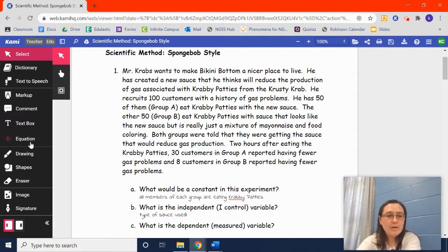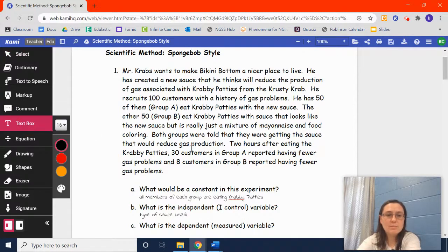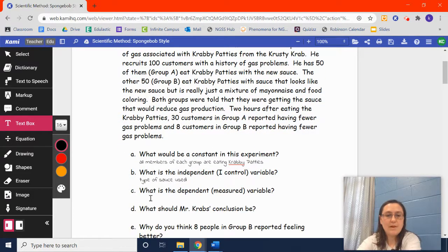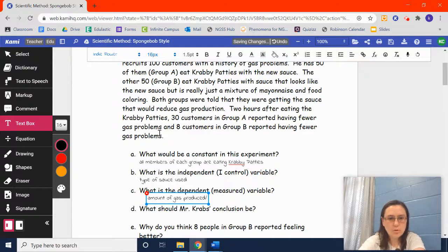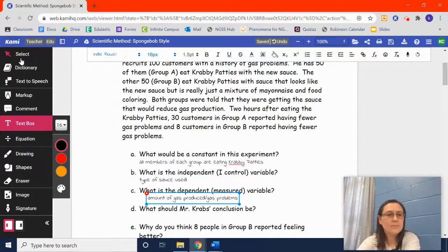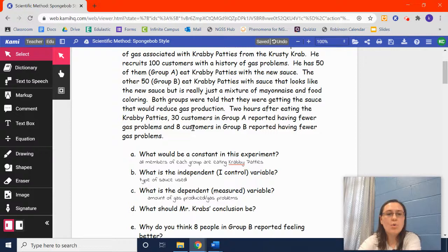The dependent or the measured variable then, what was he measuring? What was the point of giving them that certain type of sauce? The dependent variable then would be the amount of gas produced. We'll say, as it says right here, gas production, or gas problems, it says here. So, the amount of gas produced is what he's trying to test, and that's reported as having gas problems.